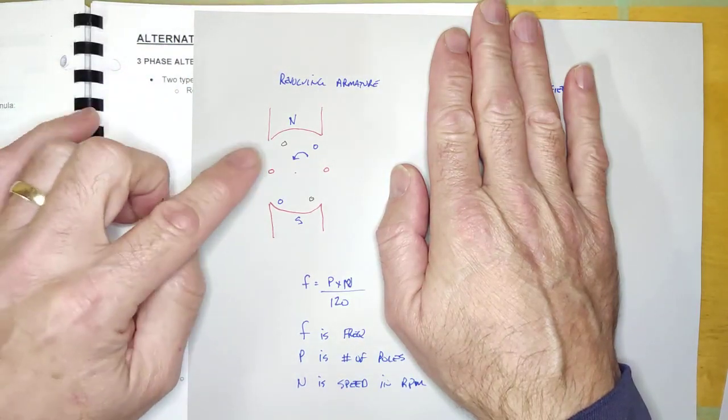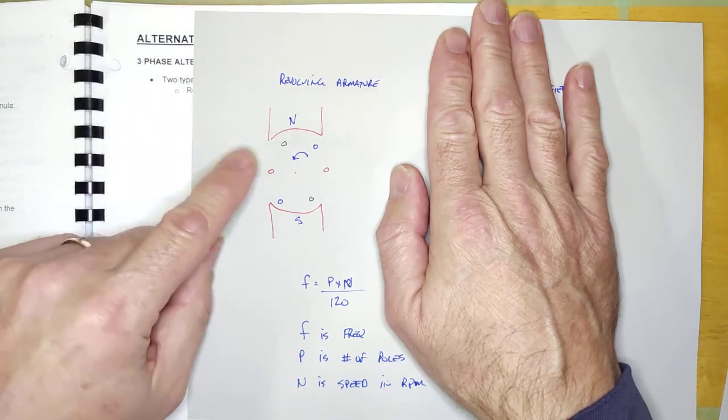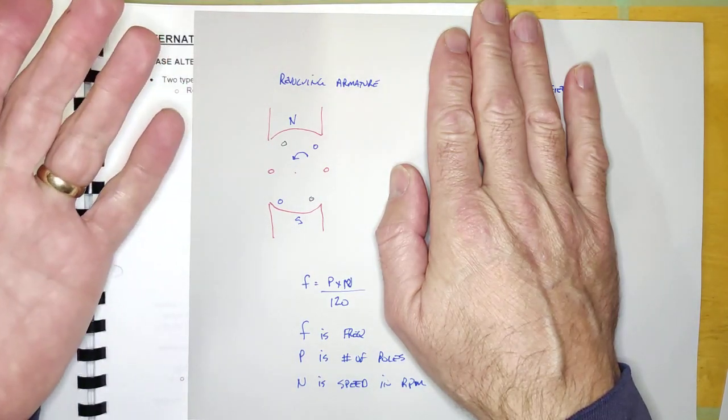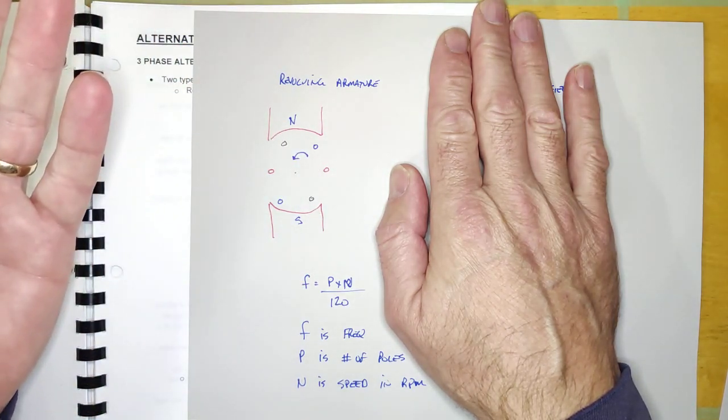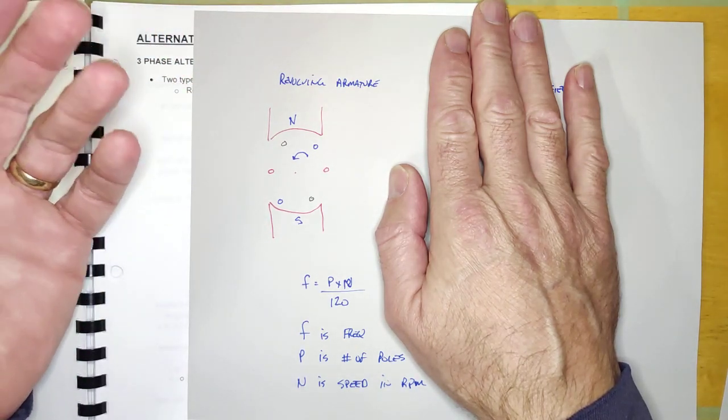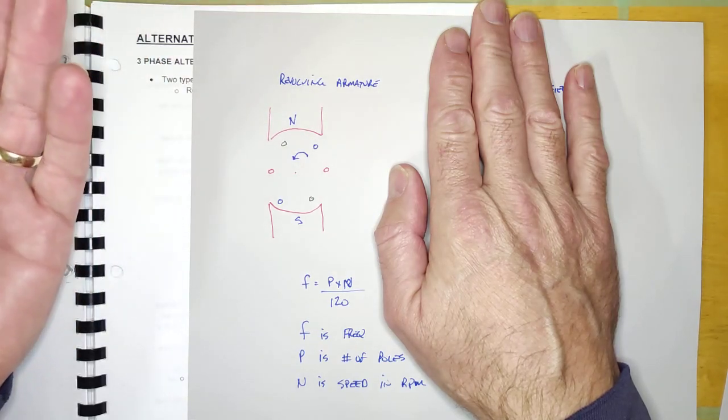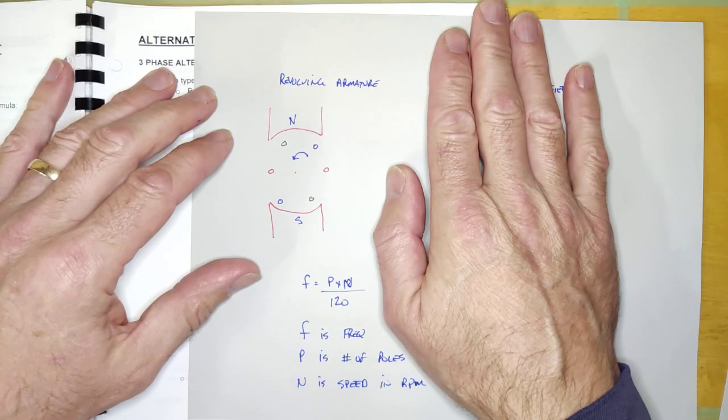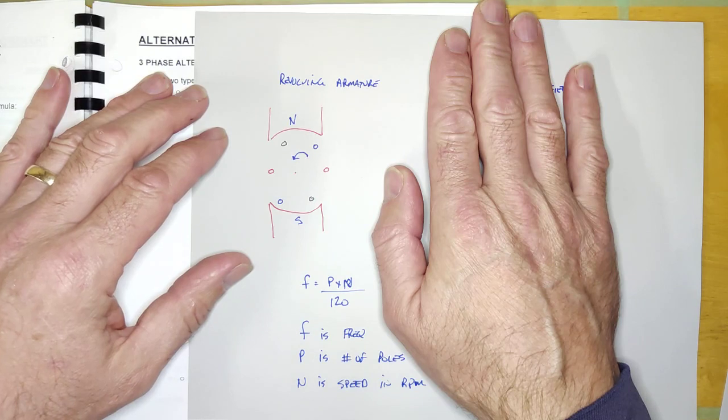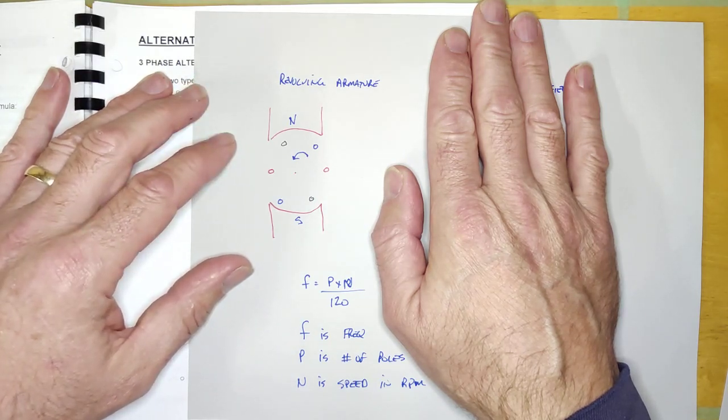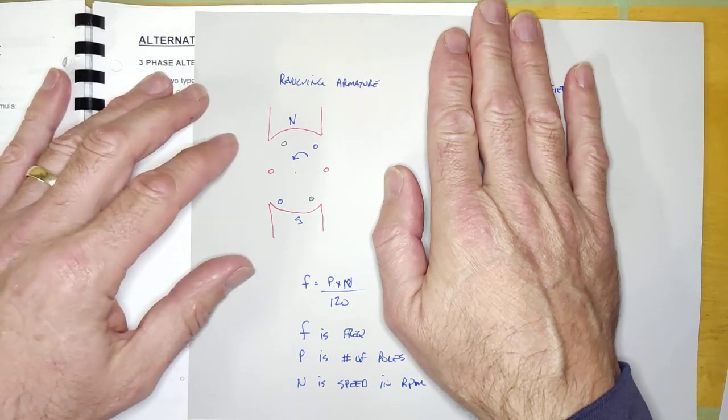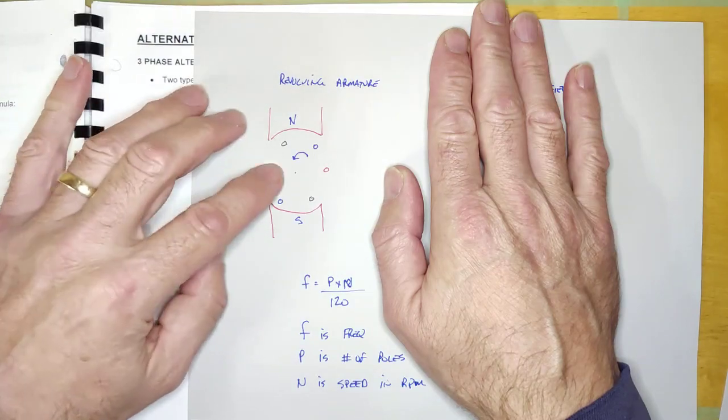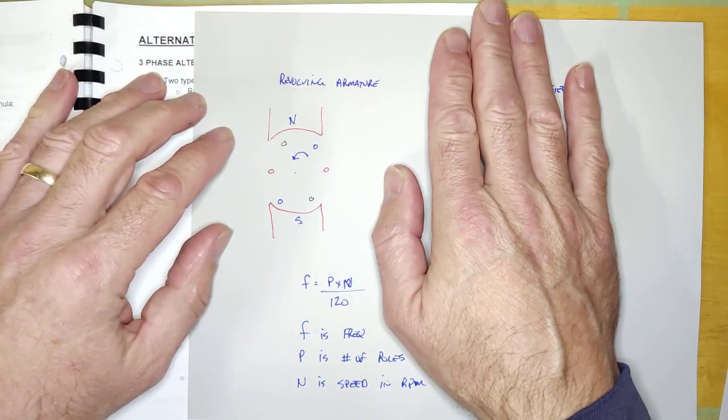But I want you to be aware that this isn't the only way this is done. The problem with producing voltage this way - and by the way, when I talk about alternators and generators for AC, they're the same thing. Sometimes I call it a generator, sometimes an AC generator, sometimes an alternator. The technically correct term is alternator for an AC machine and generator for a DC machine, but in real life we call them all generators.